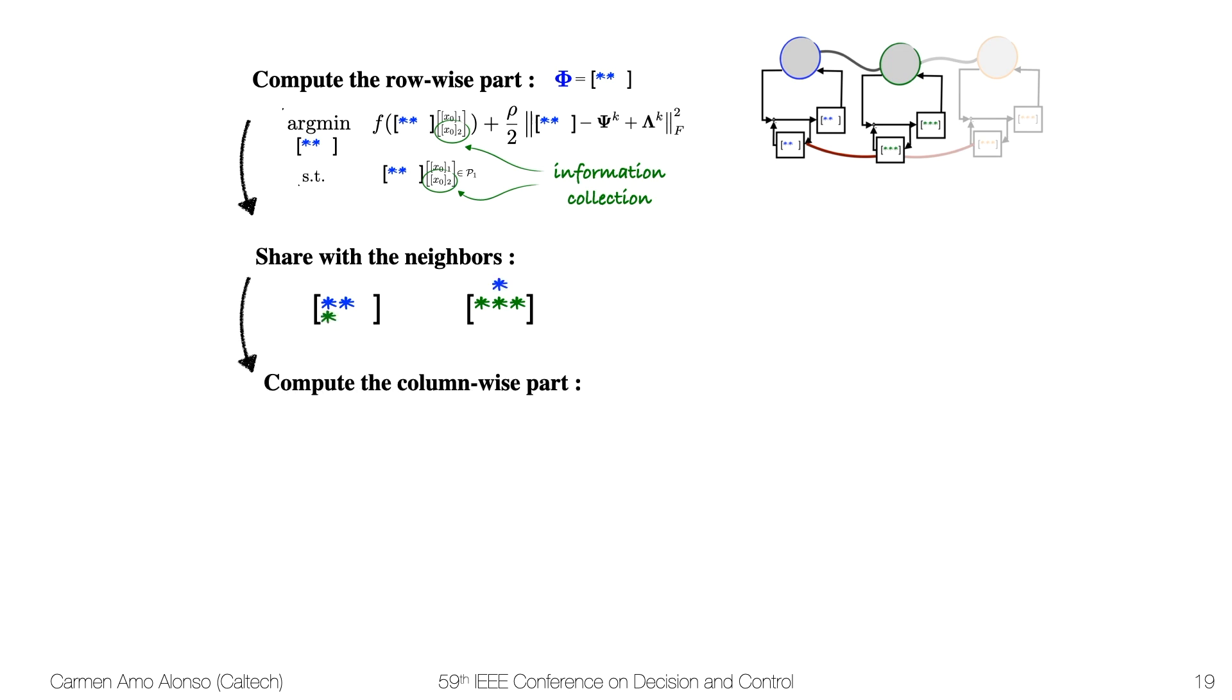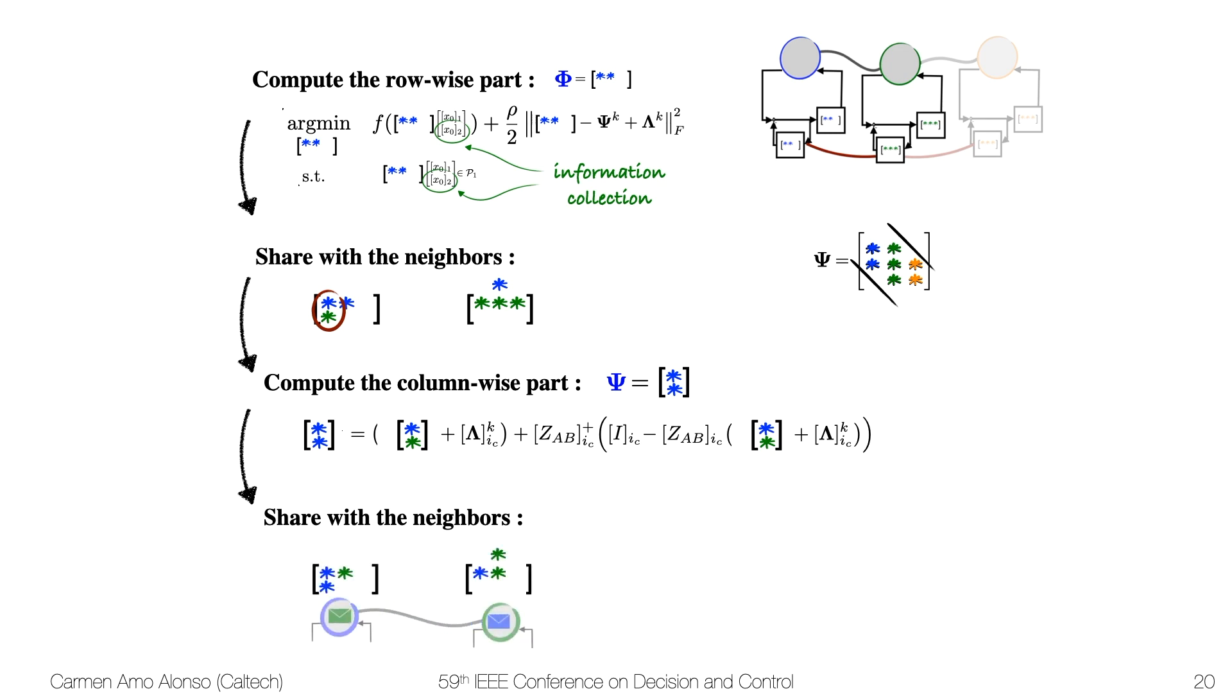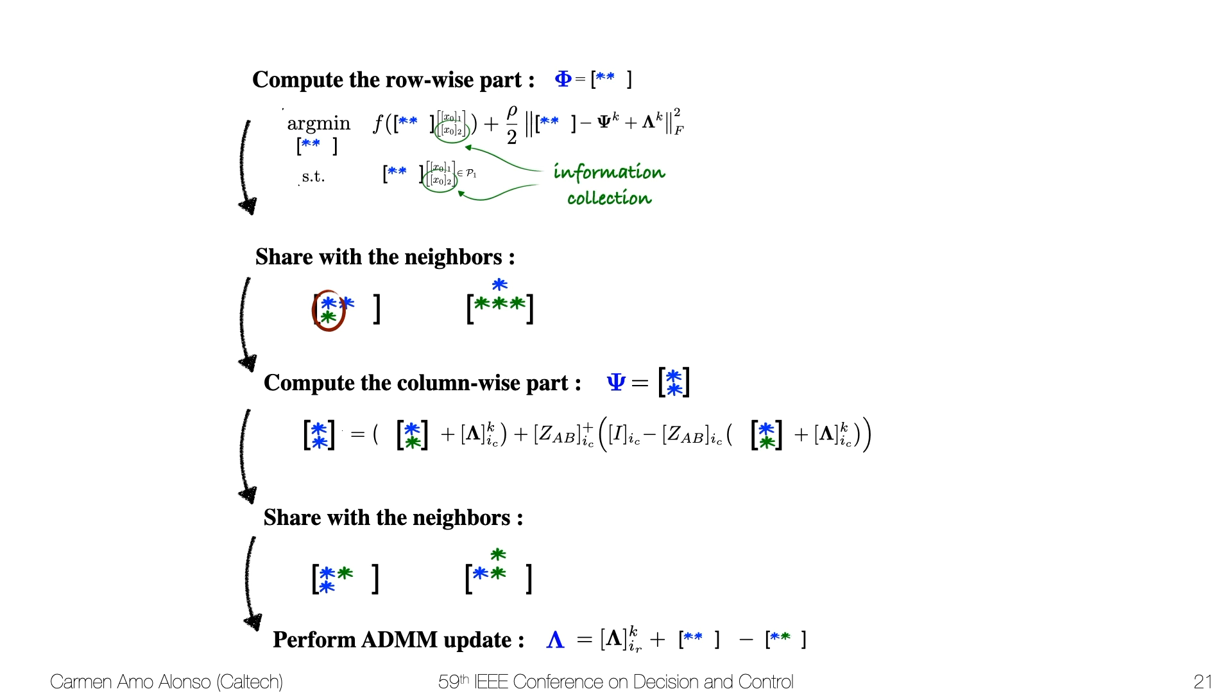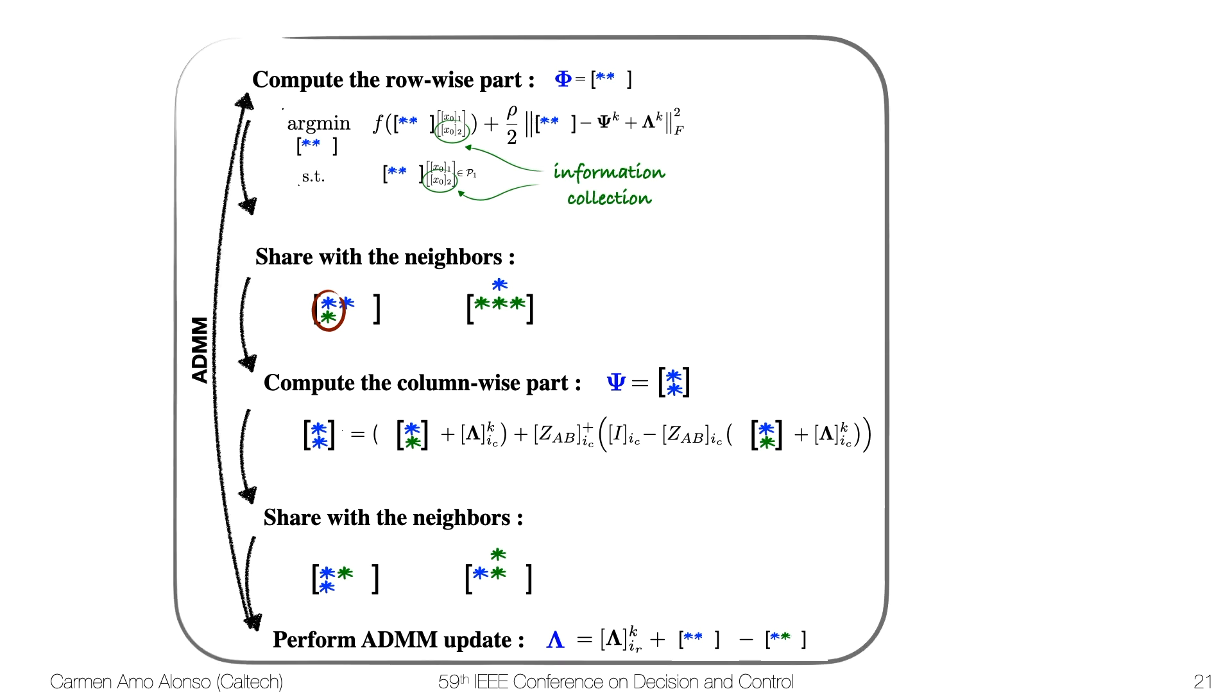We can now compute the column-wise part, and as the blue subsystem we will need to compute the first column of φ. We will use the information that we just received and the computation in closed form will look like this. Once again we need to share information with the neighbors, this time to receive information about the rows. Lastly we perform the ADMM update and we keep iterating until convergence. And this is the distributed and localized synthesis that we proposed. Notice that I just illustrated it with a row and a column per subsystem, but there is usually a set of rows that a subsystem needs to solve for, and the size of this set depends on the time horizon and the dimension of the subsystem. But in any case, given the row-wise separability, each subsystem can solve for its rows in series.